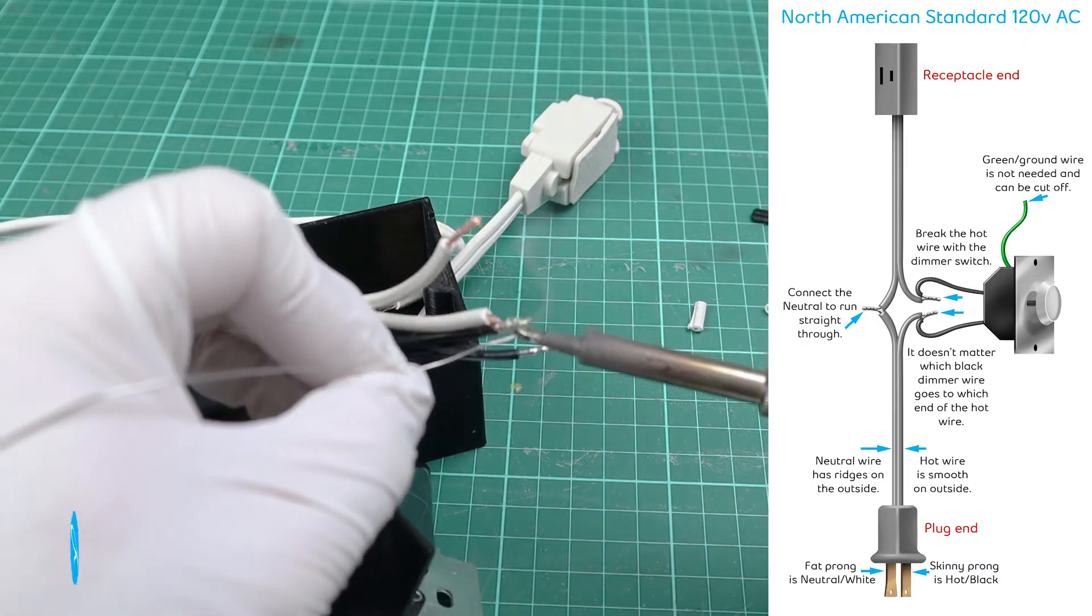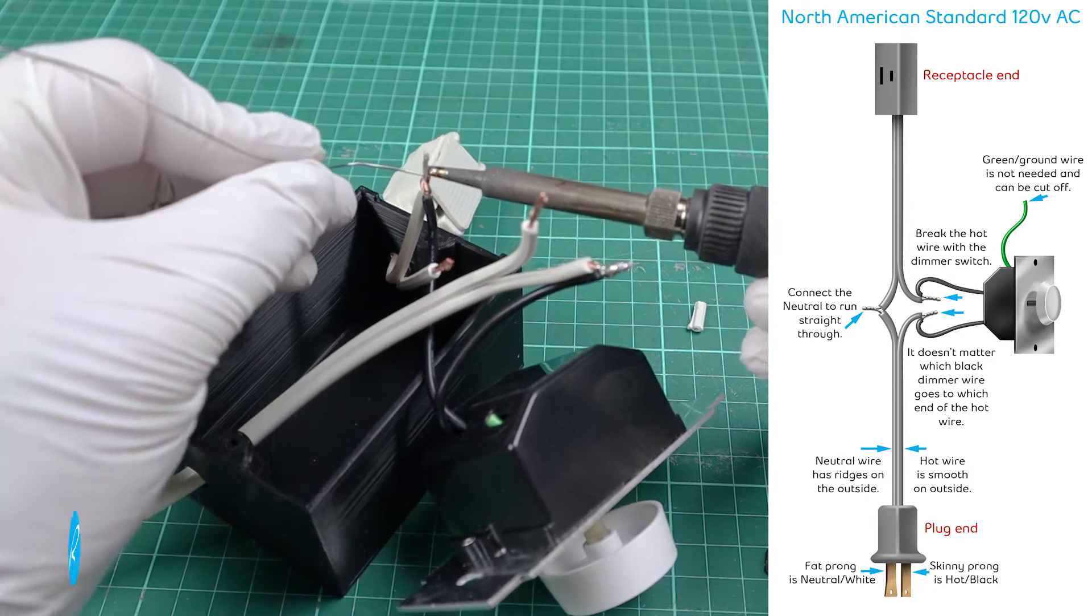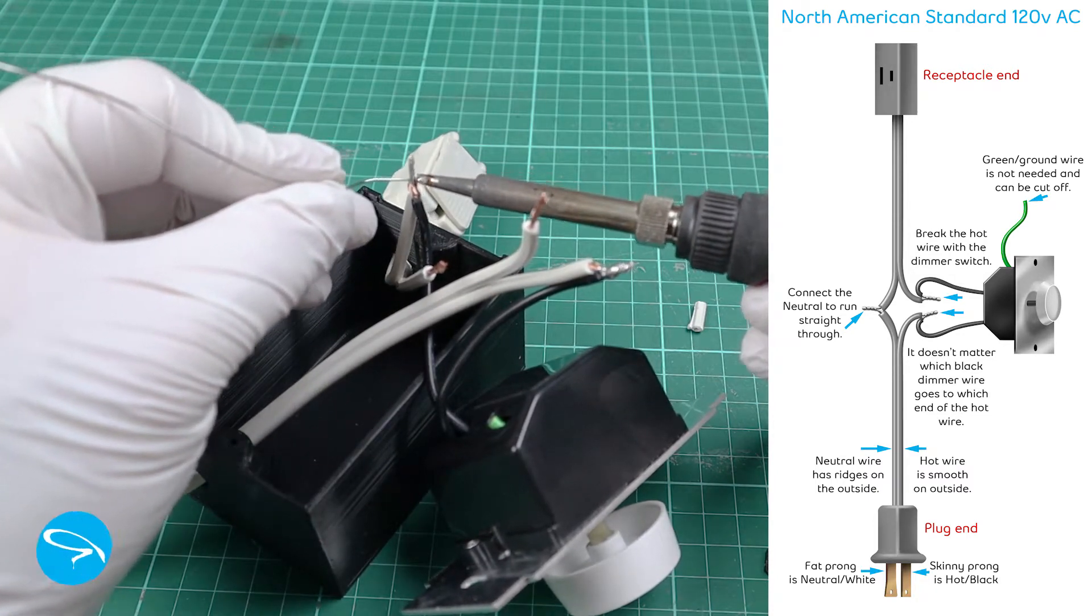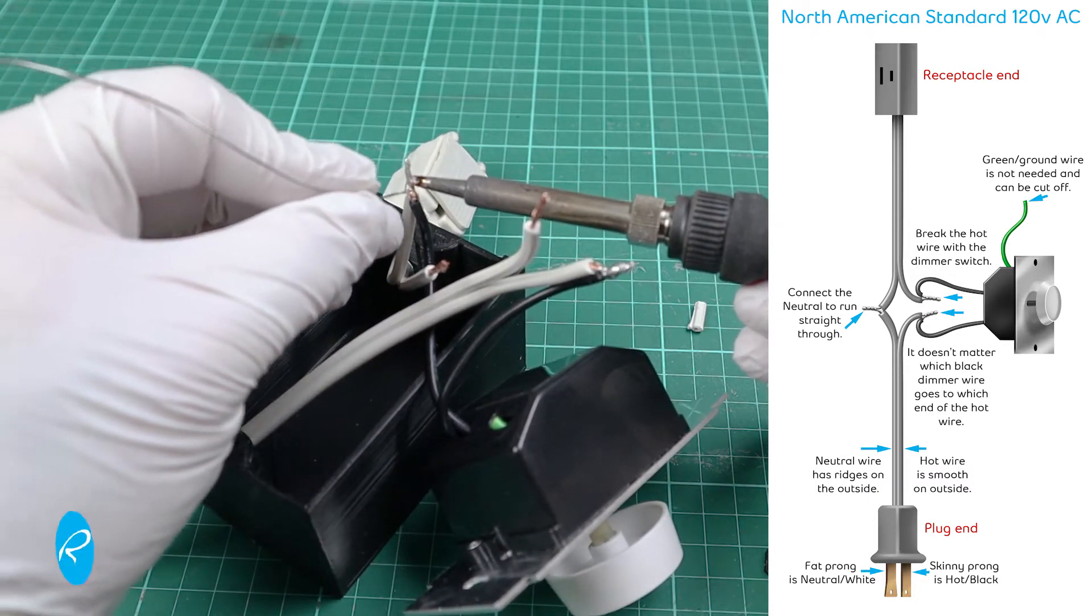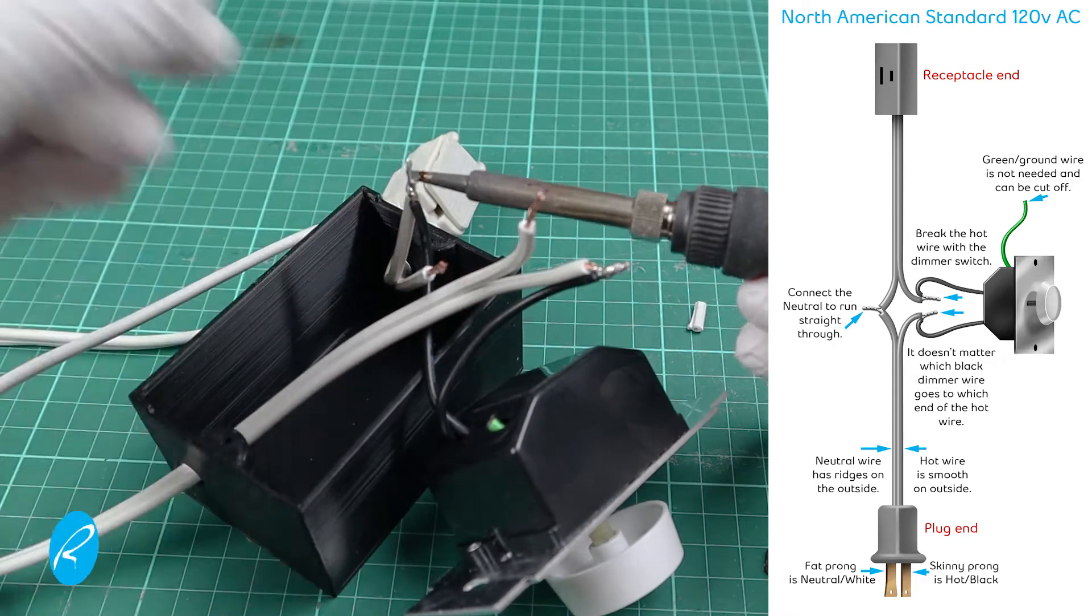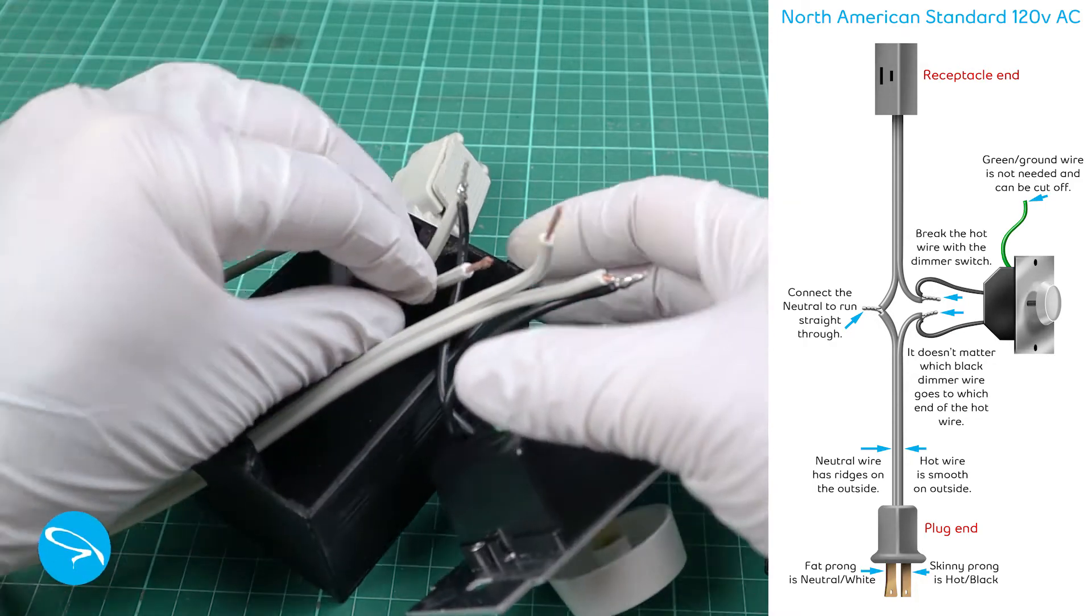The dimmer switch itself with two black wires, neither one of them is a neutral wire. They are both meant to be connected to black, and it doesn't matter which one you use to which end of the extension cord.